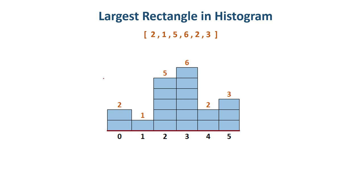So what this problem is talking about: we have to find all possible rectangles here and among all the rectangles, which one has the highest area — we have to return that number. In this case, the highest rectangle has area 10, because the height is 5 and the width is 2, so 5 into 2 equals 10.